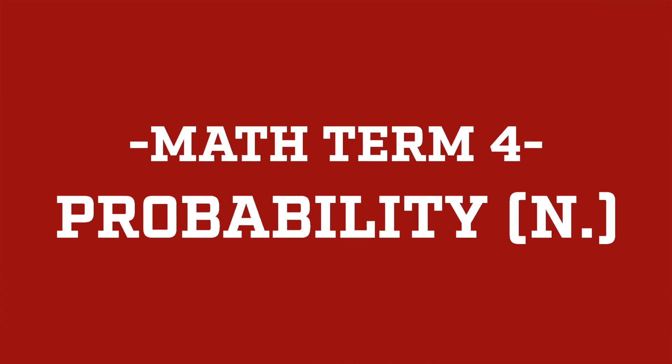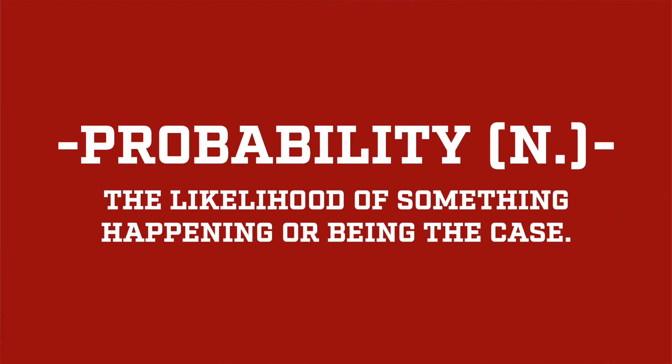Our last math term is probability — the likelihood of something happening or being the case. We can understand probability by analyzing data, and this helps in decision making. We usually define this in percentages: 0% if it's impossible, 100% if it's certain, and everything in between from unlikely to likely. There's almost nothing that's certain or impossible, especially in football, so we're usually working on the unlikely to likely scale.